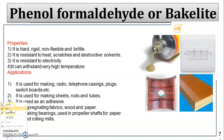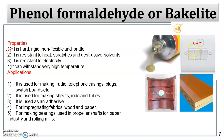Properties of phenol formaldehyde or Bakelite: it is hard, rigid, non-flexible, and brittle. Switches and switch boxes are a good example — they are hard and rigid. If dropped from a certain height, it will break because it is brittle. It is also resistant to heat, scratches, and destructive solvents.